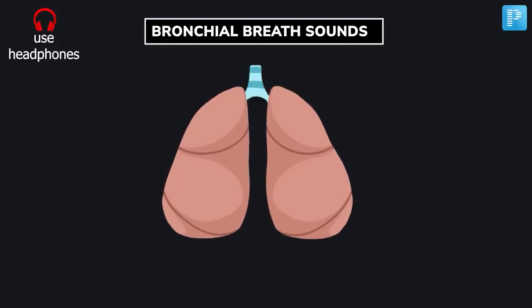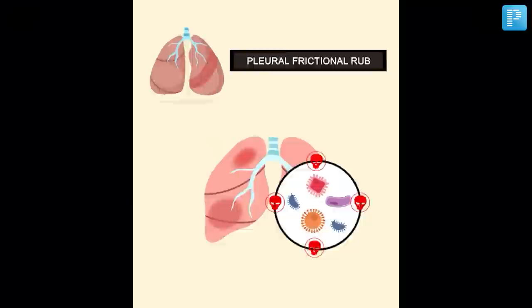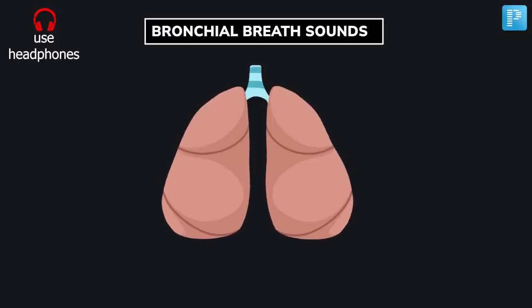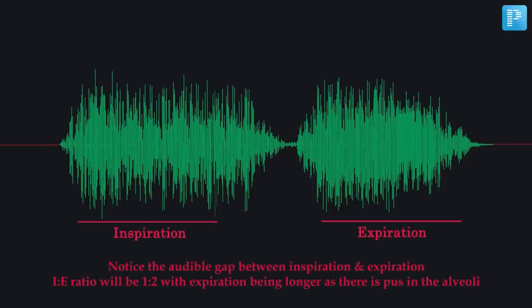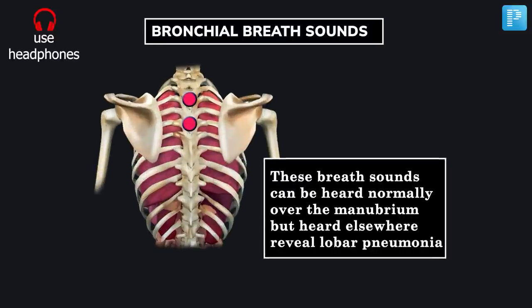Finally, the most important finding: bronchial breathing. It can be heard normally over the manubrium sterni or posteriorly over the spine between C7 to T3 vertebra. It has an inspiratory-to-expiratory ratio of 1:2 with a clear audible gap.